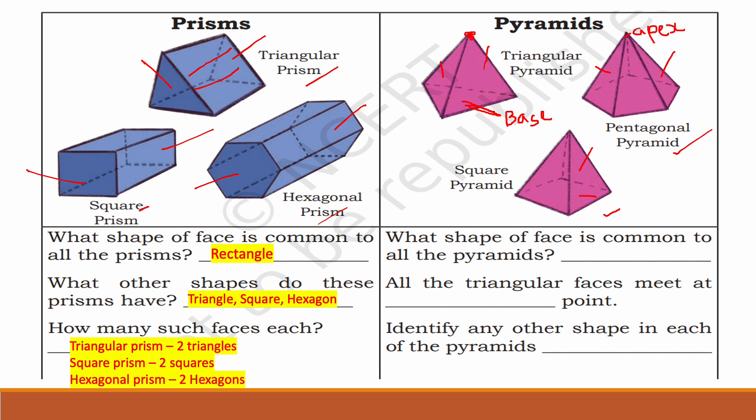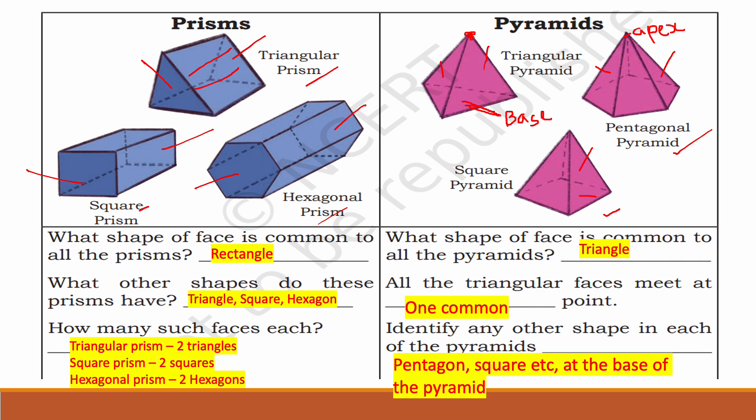One shape of face is common to all the pyramids — triangle. The sides of the pyramid are always triangles. All the triangular faces meet at one common point called the apex. Identify any other shape in each of the pyramids — pentagon, square, etc. — which forms the base of the pyramid.